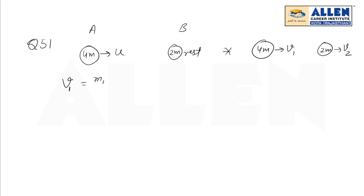Final speed of body A is M1 minus M2 upon M1 plus M2 into U1 plus 2M2U2 upon M1 plus M2, which becomes 4m minus 2m upon 4m plus 2m U plus 0, equals U by 3.